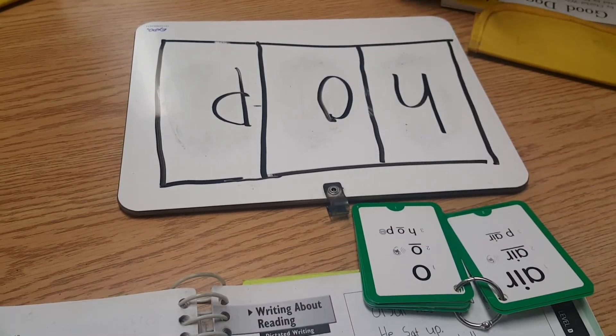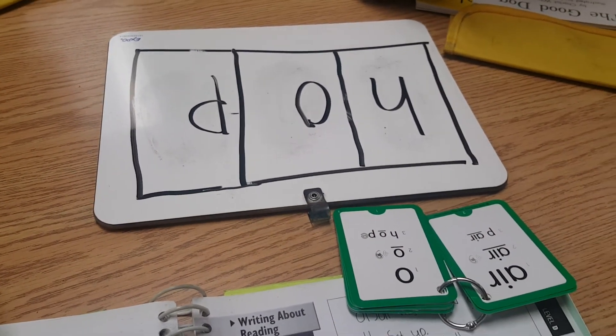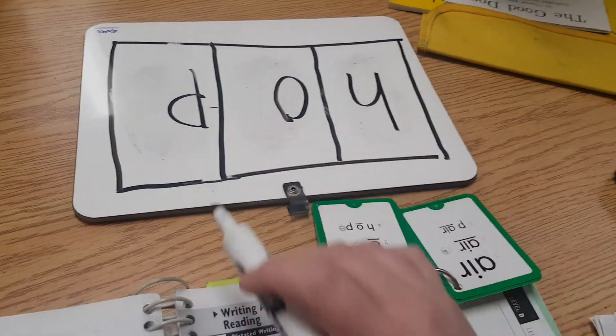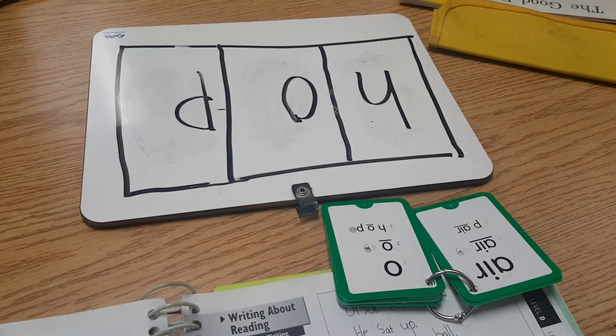Did I write hope? No, you spelled hop. I only spelled hop because this looks like a CVC word and it makes the O short. I want to make the O long.